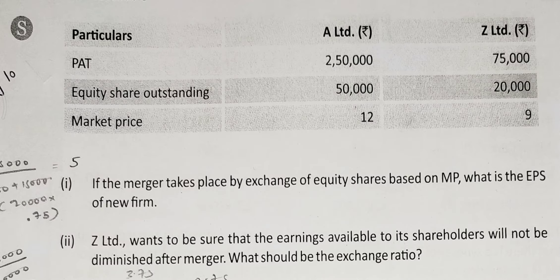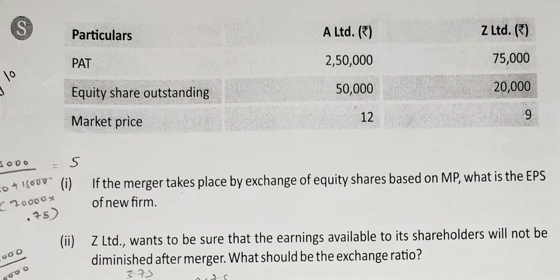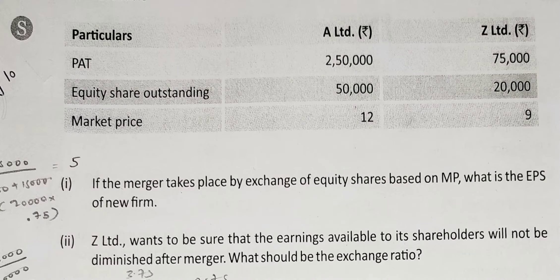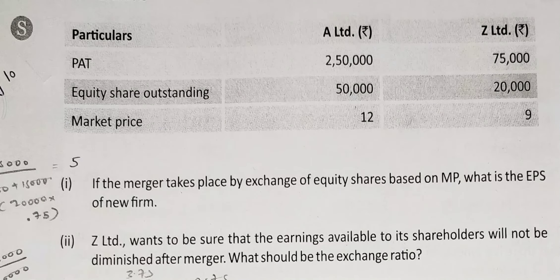First point: if the merger takes place by exchange of equity shares based on market price, what is the EPS of the new firm? The swap ratio equals the relevant factor of target divided by relevant factor of acquirer. The relevant factor here is market price. Market price of target is 9, market price of acquirer is 12. So swap ratio will be 9 divided by 12, which is 0.75.